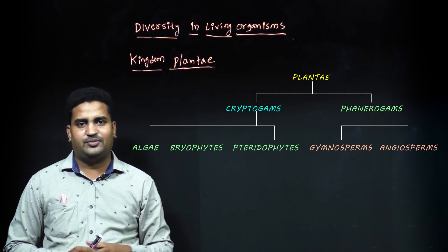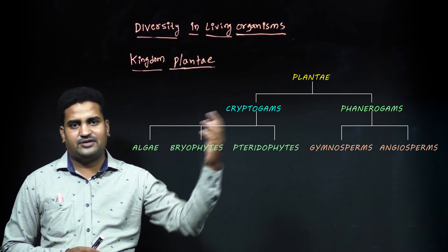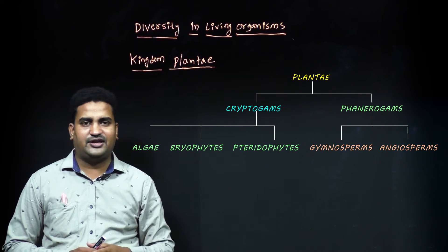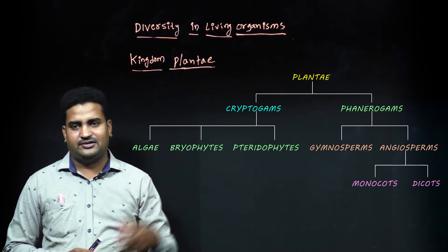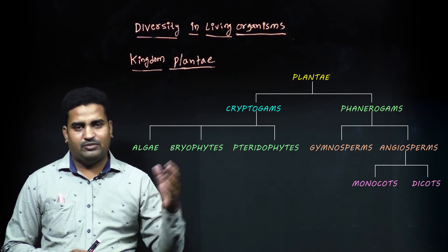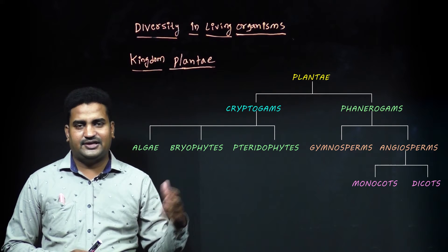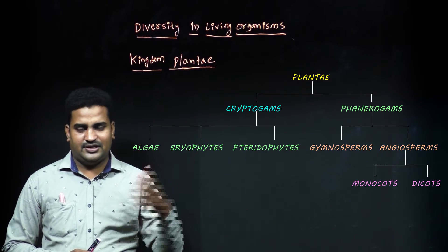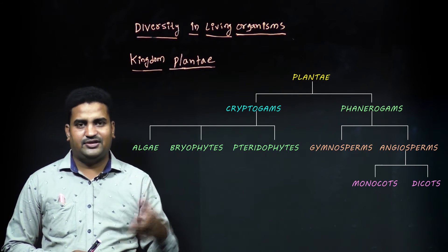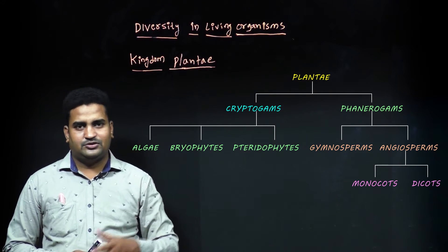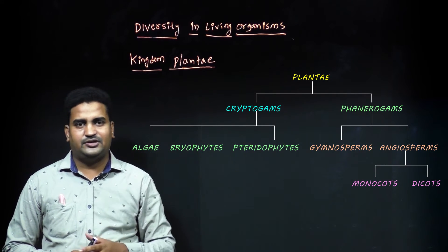Angiosperms are flowering plants that bear seeds covered by fruits. Angiosperms are further classified into monocots and dicots based on the number of cotyledons present in their seeds. Let us understand each in detail.